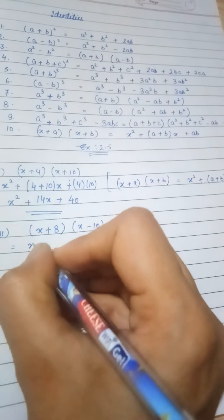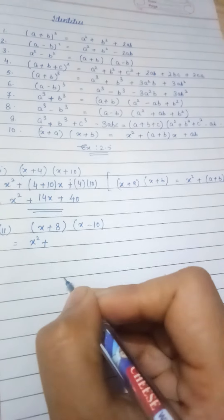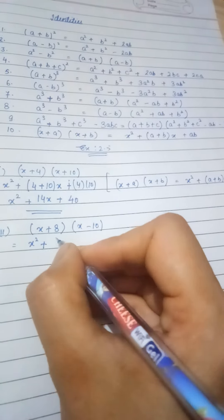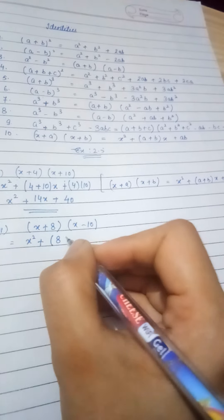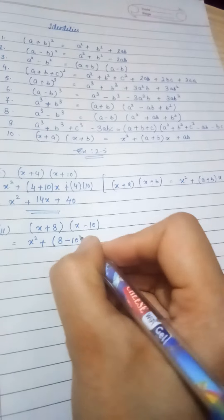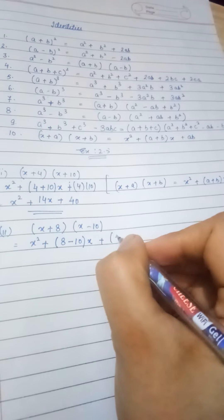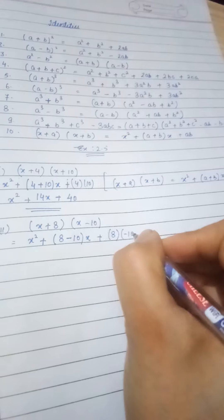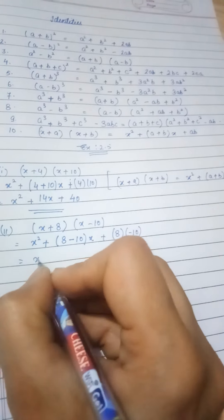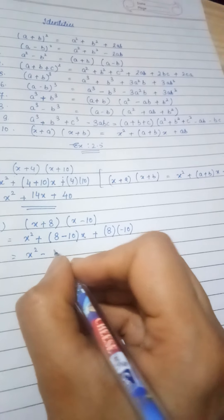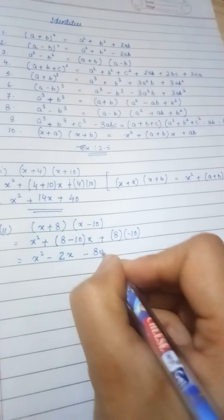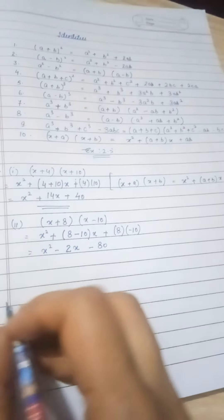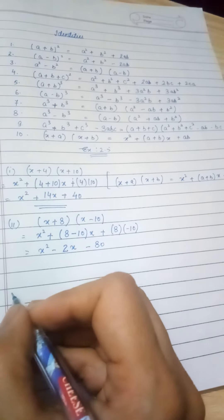That is x plus 8 times x minus 10. Same as the first term. The same identity will be written over here. Then we have x square, first term squared, and then a plus b. Here it's minus, so we have minus 2x plus ab, 8 into minus 10.